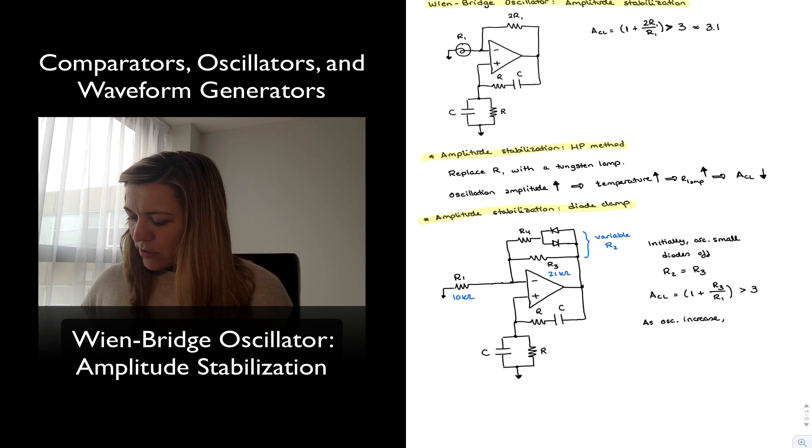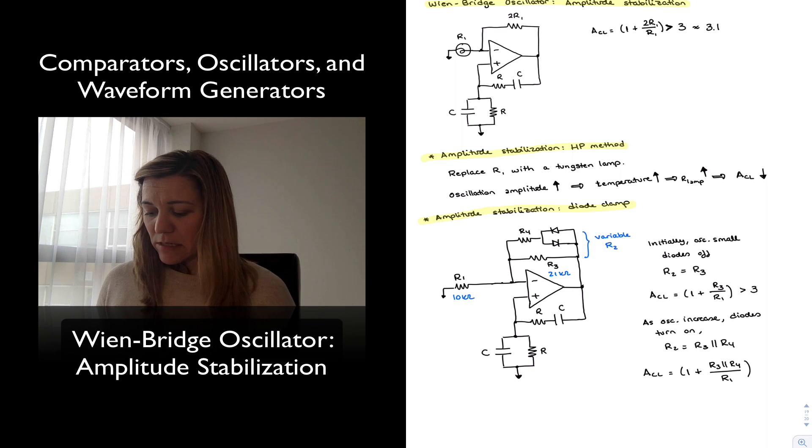As oscillations increase, diodes turn on, and R2 becomes equal to R3 in parallel with R4. And therefore, my new gain is going to be equal to 1 plus R3 in parallel with R4 divided by R1. And the idea is, R4 should be sufficiently large so that the parallel combination is going to give me approximately equal to 2, so we could make it one order of magnitude larger than R3, something like 200 kilo ohms.